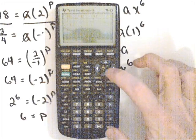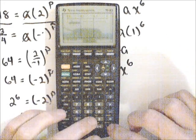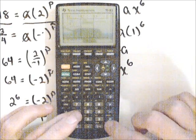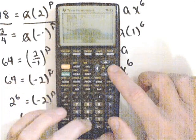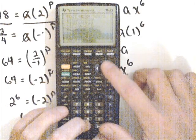I'm going to clear my list and put my x values in L1: -1 and 2. For my y values: 3/4 and 48. Now I'll go back to stat calc.